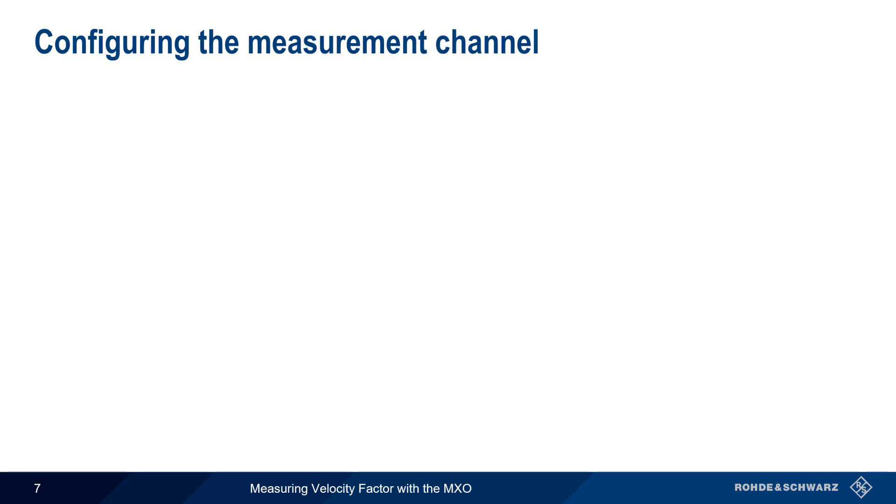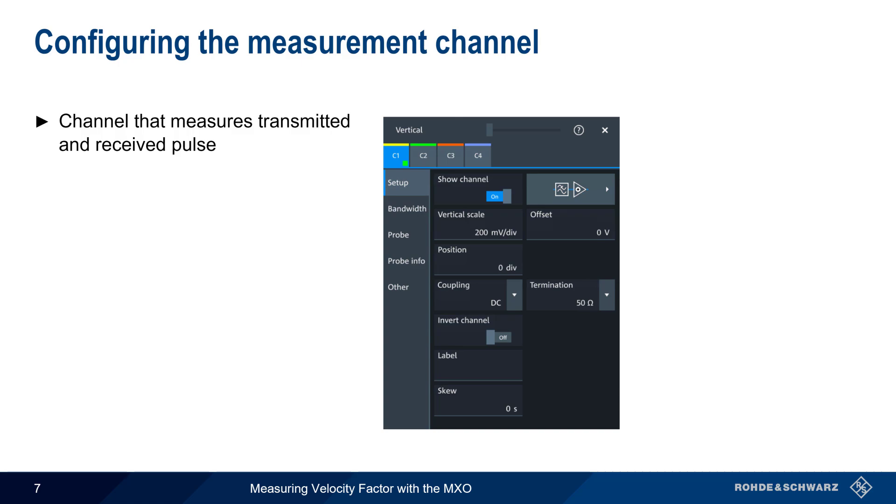Next we need to configure the measurement channel. This is the channel that measures the transmitted and received pulse. First, the channel termination should normally be set to 50 ohms in the setup menu in order to match the generator impedance. If necessary, the vertical scaling or volts per division setting should also be set appropriately.